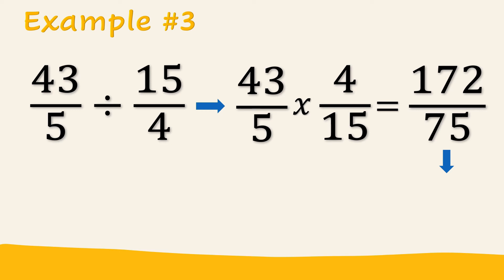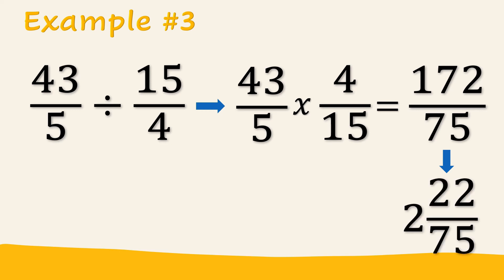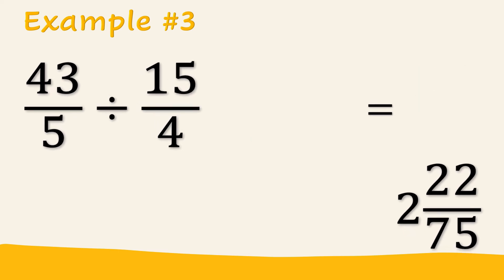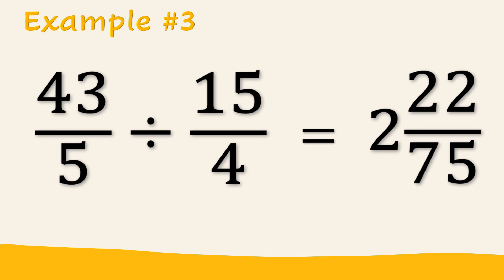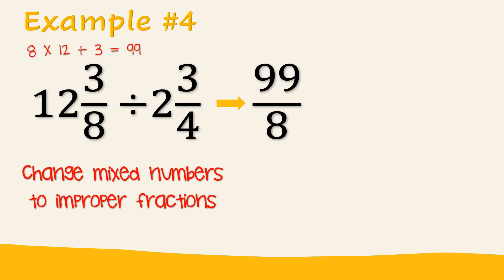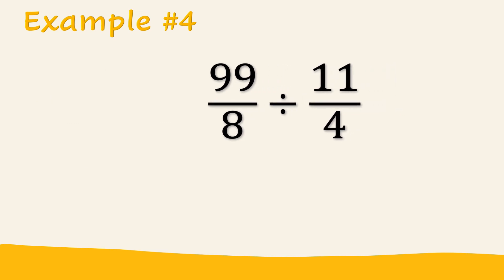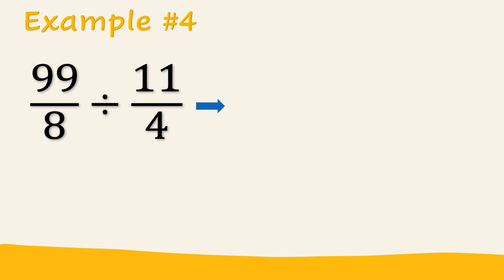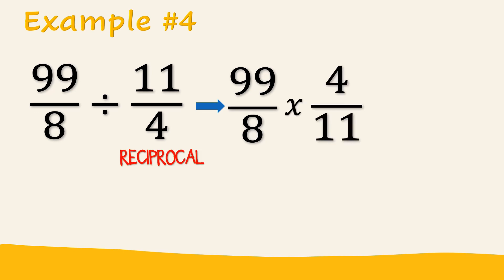We have an improper fraction as our answer, so let's change it to a mixed number. We will have an answer of 2 and 22 over 75. Therefore, 43 over 5 divided by 15 over 4 equals 2 and 22 over 75. We'll see you next time. Thank you.